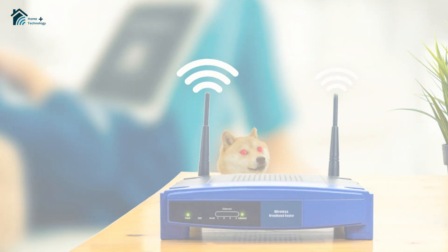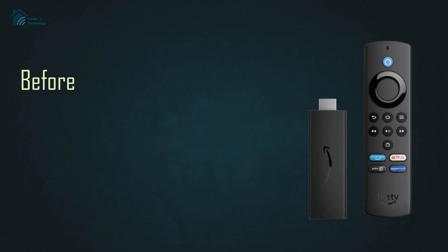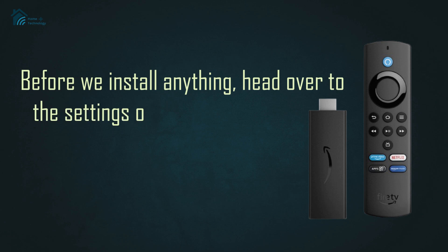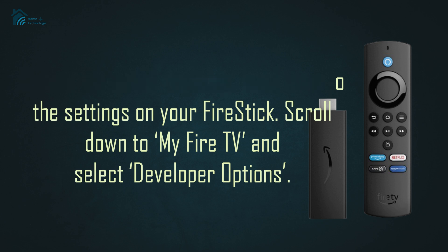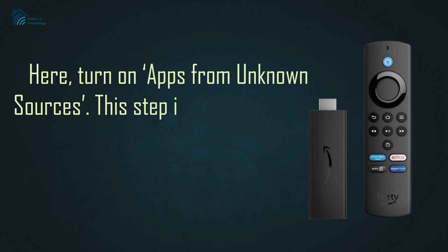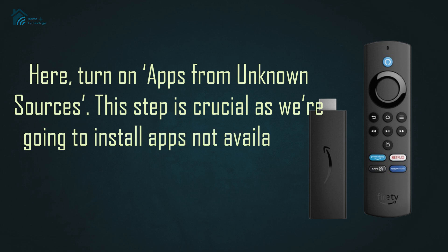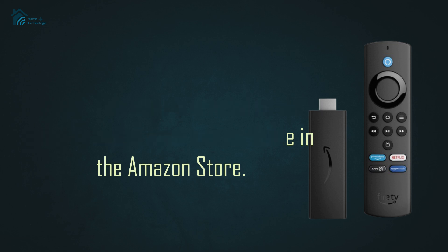First, grab your Fire Stick and make sure it's connected to your Wi-Fi. Before we install anything, head over to the settings on your Fire Stick. Scroll down to My Fire TV and select Developer Options. Here, turn on Apps from Unknown Sources. This step is crucial as we're going to install apps not available in the Amazon Store.